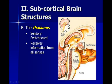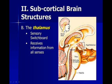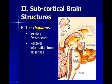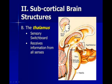The thalamus, which is at the top of the brainstem, is our sensory switchboard. It receives information from all of our senses. If you take sensation and perception, you'll see a lot of information about the thalamus — the lateral geniculate nucleus, which is critical for vision, and the medial geniculate nucleus, which is part of the auditory system. All of our senses get relayed through the thalamus, with the exception of our sense of smell or olfaction, which goes straight to the olfactory bulb.